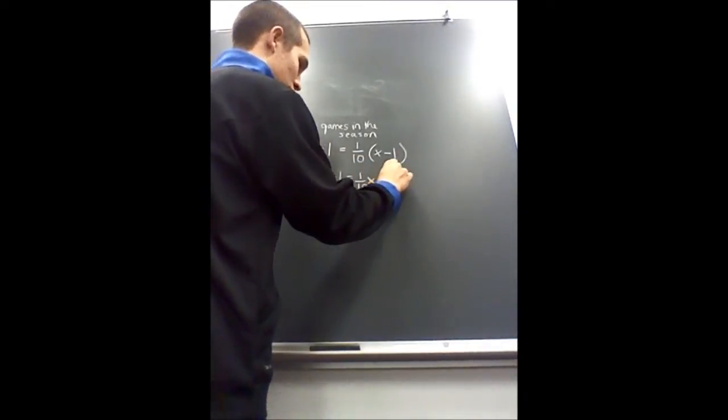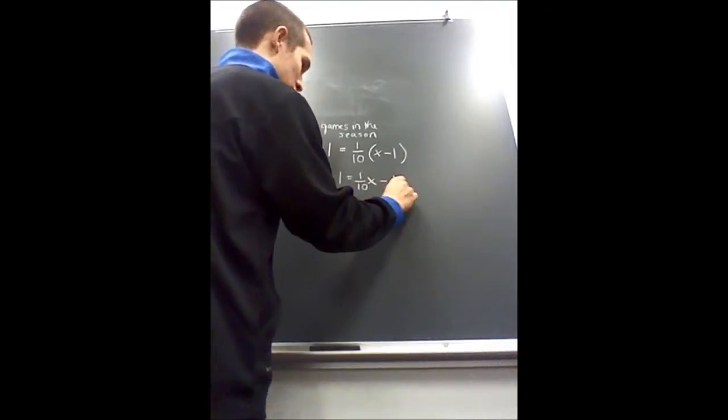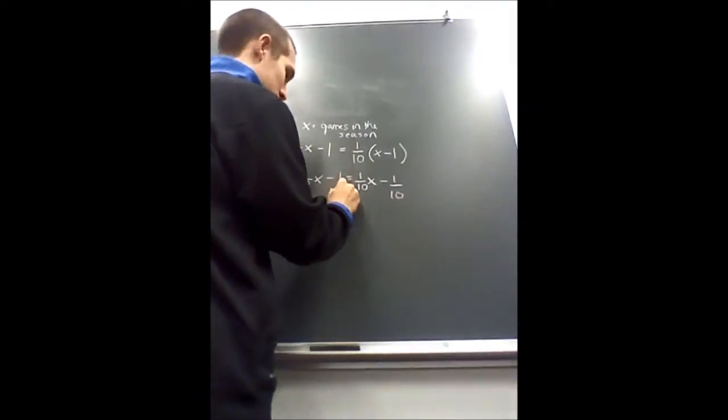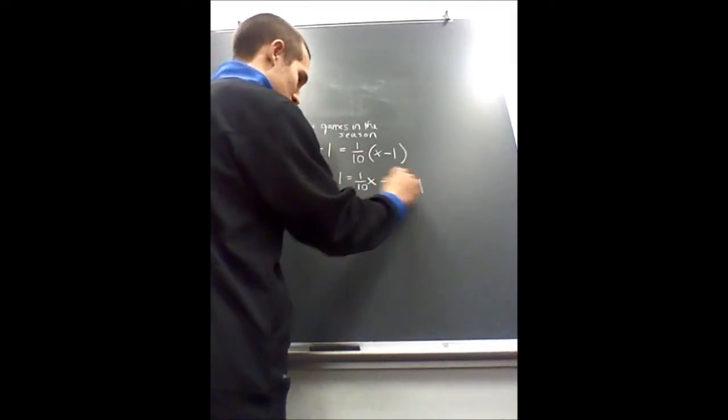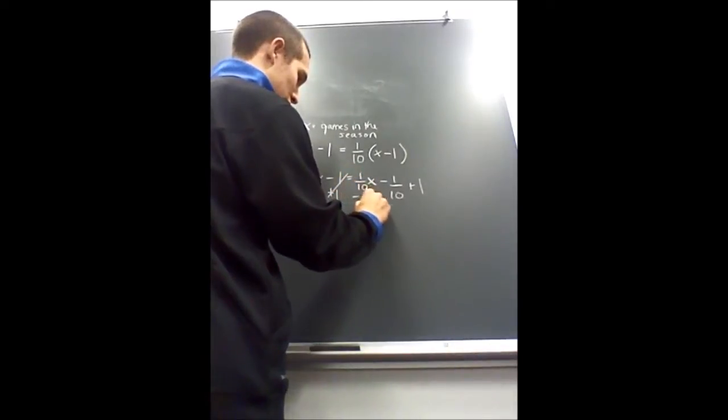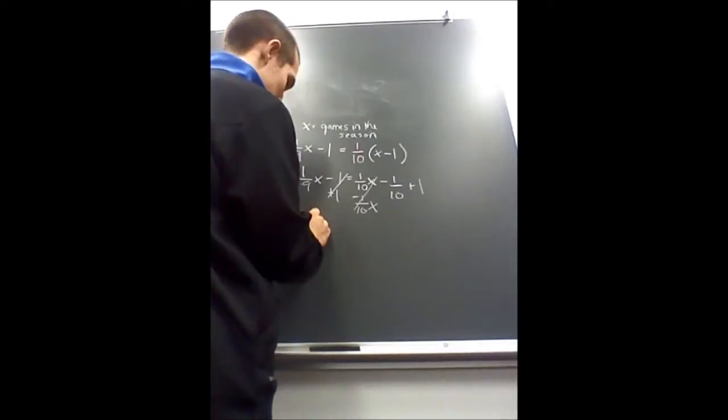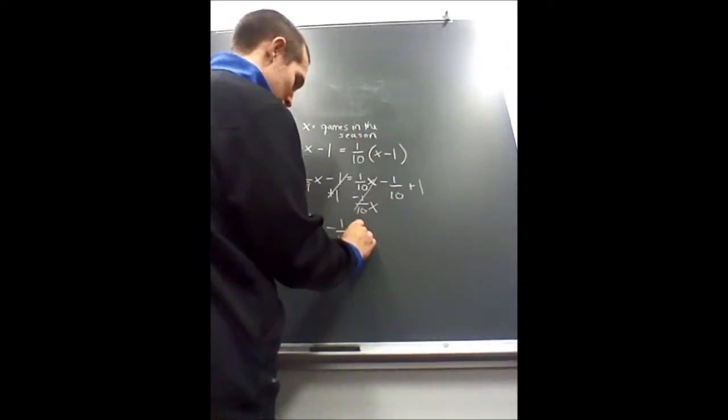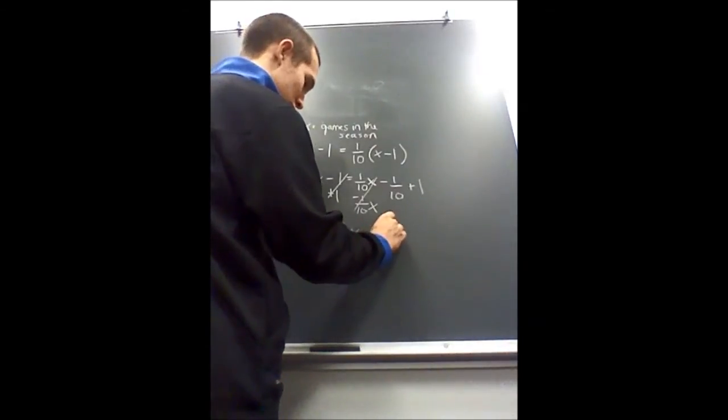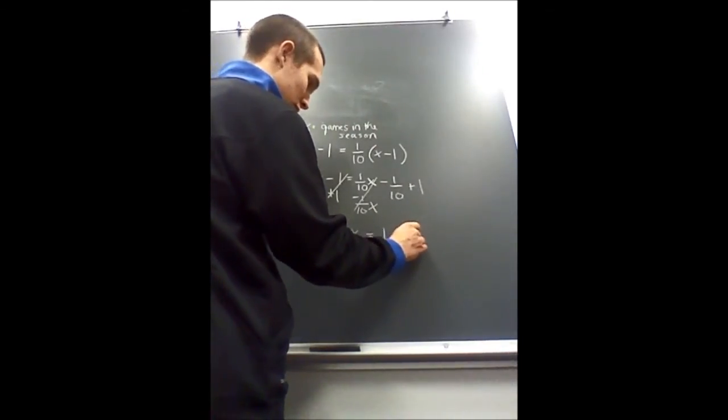So you would distribute the one-tenth. And then you want to get like terms, so I'm going to add one to this side. I'm going to subtract one-tenth X from this side. So you get one-ninth X minus one-tenth X is equal to one minus one-tenth.